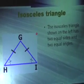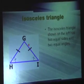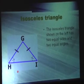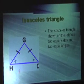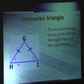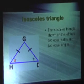Isosceles triangles shown on the left have two equal sides here and here, which are also called legs, and a base down here. Isosceles triangles also have two equal angles.